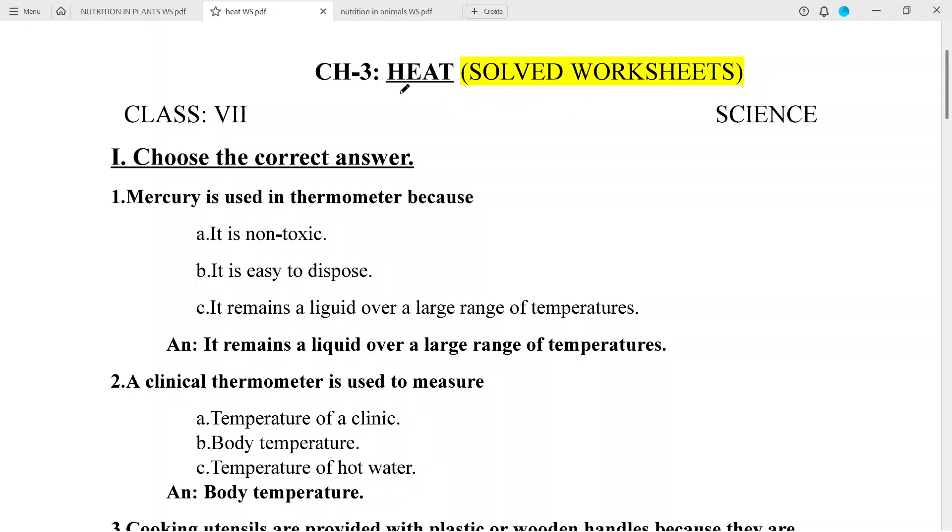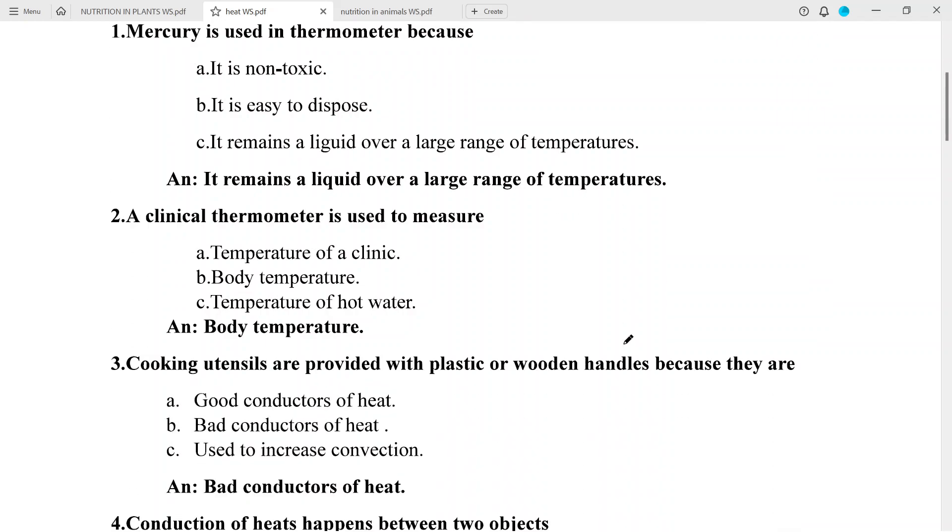Chapter 3 Heat Solved Worksheet, Class 7 Science. Question 1, choose the correct answer. Number 1: Mercury is used in the thermometer because answer: it remains a liquid over a large range of temperatures.